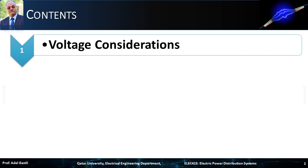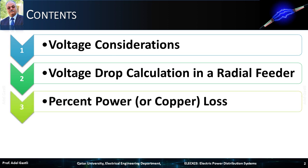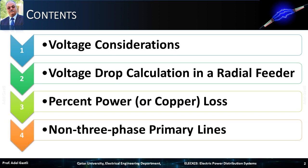The content of Chapter 4 is as follows. First, I will talk about some voltage considerations that I briefly talked about in the previous chapter. Then, I will present a method of voltage drop calculation in a radial feeder. Then, I will present how to calculate the percent power or copper loss. Finally, I will present the specificities for non-three-phase primary lines. In this lecture, I will cover only sections 1 and 2.